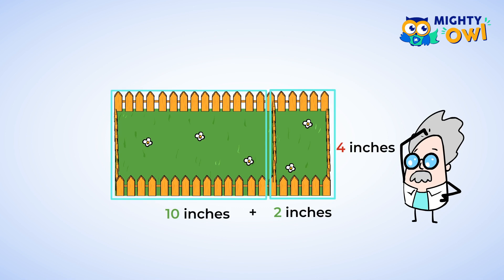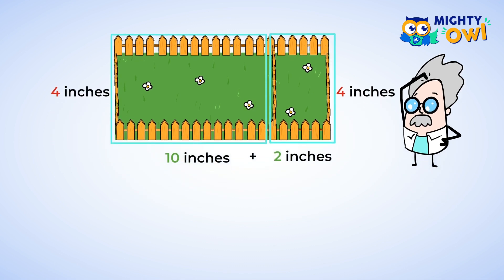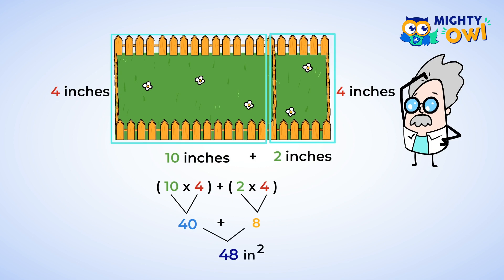We know that if the width of this side is 4 inches, then the width of the opposite side is also 4 inches. 10 multiplied by 4 equals 40, and 2 multiplied by 4 is 8. We can add these two areas together now — 40 plus 8 is 48. The area of the rectangle is 48 square inches.